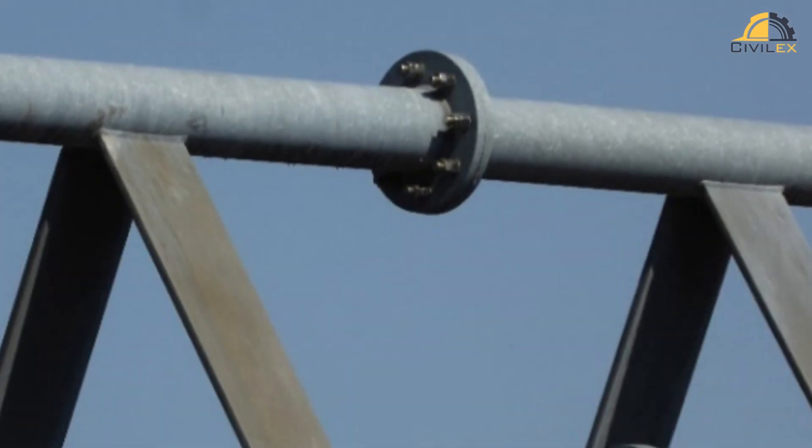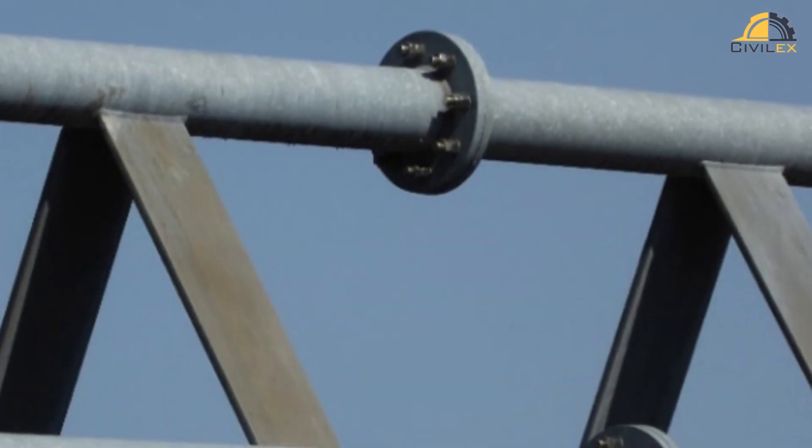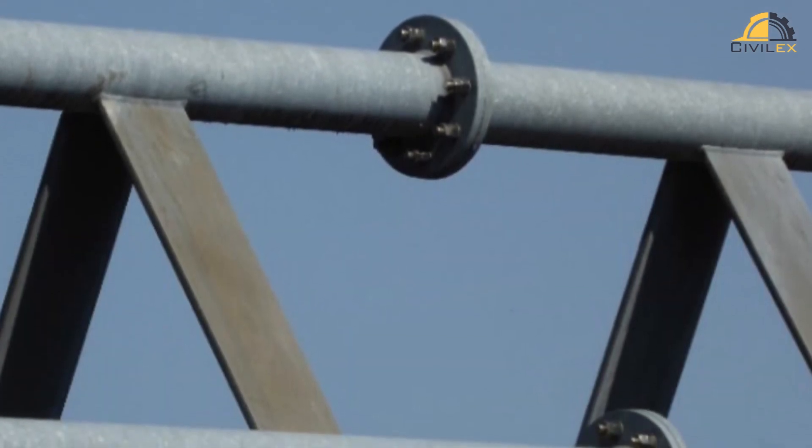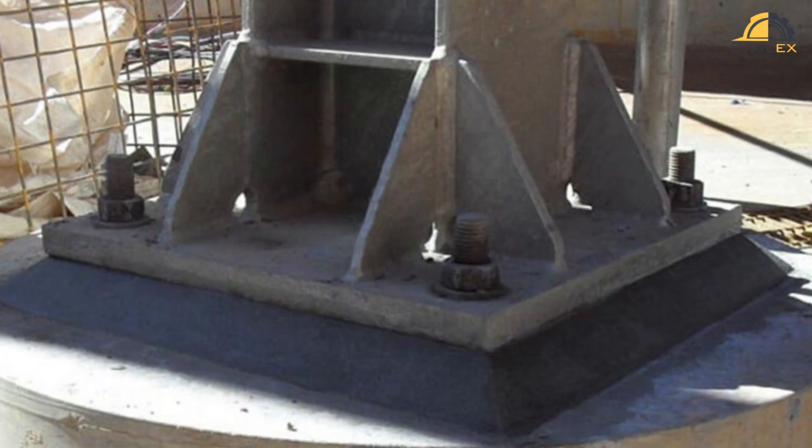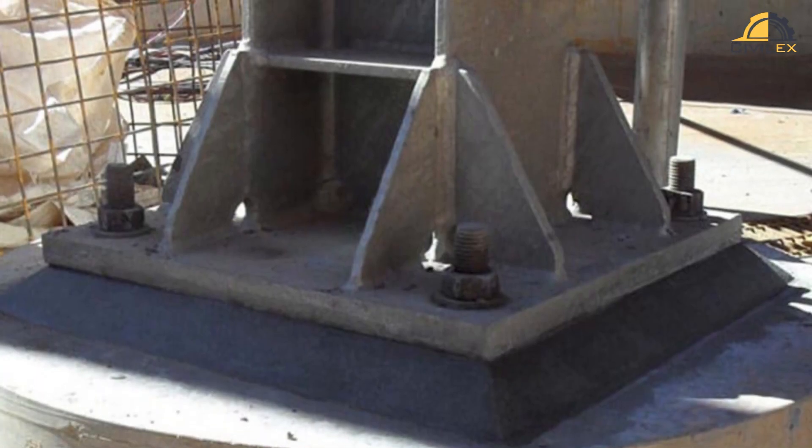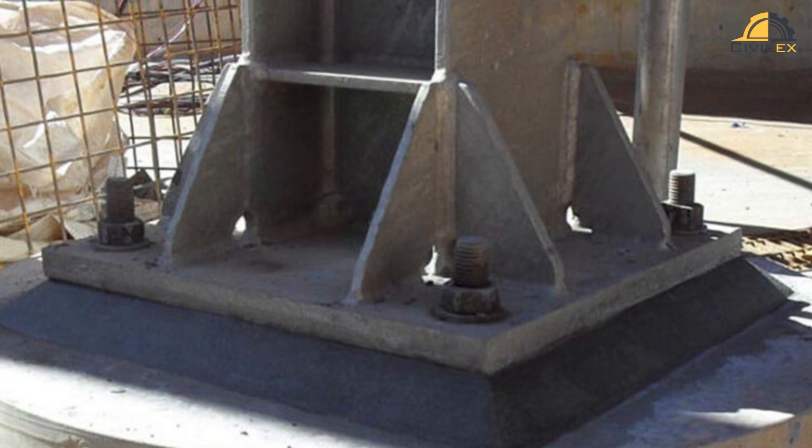Tension connections transfer axial forces, which are crucial for elements like tension rods or hangers. Column-base connections secure columns to their foundation, transmitting vertical loads and moments.